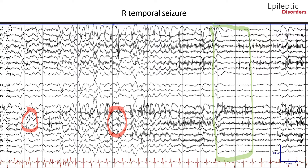To summarize this seizure electrographically: there was initial right temporal low amplitude rhythmic delta activity with seizure onset in the right temporal T2 and T4 region, with subtle evolution in frequency, morphology, and amplitude of the waveforms to higher amplitude sharply contoured 3 to 5 Hz epileptiform discharges, with early spread to the left temporal and frontal region and subsequently to bilateral hemispheric chains including the midline channels, gradually ending with postictal generalized EEG suppression.